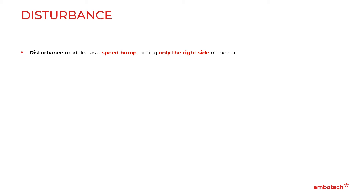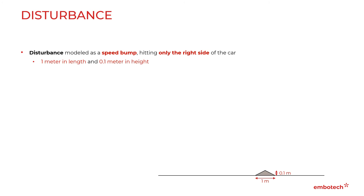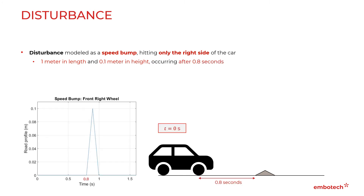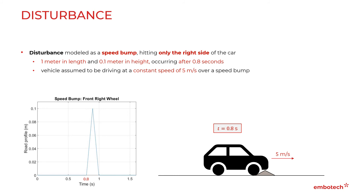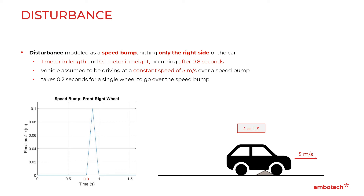The disturbance will be modeled as a speed bump, and it will be assumed that it only hits the right side of the car, whereas the left side remains unaffected. The detected speed bump is one meter long and 0.1 meters high, and it is anticipated that the vehicle will reach it in 0.8 seconds. The vehicle is assumed to be driving over the speed bump at a constant speed of five meters per second. Considering the speed of the vehicle and the length of the speed bump, it will take 0.2 seconds for a single wheel to go over it.